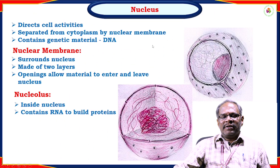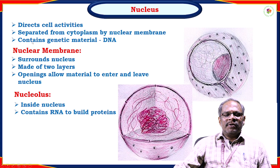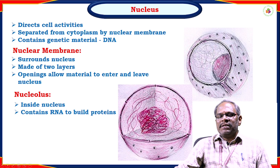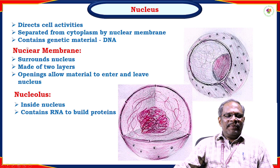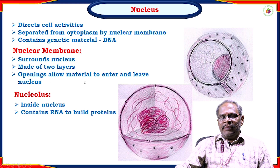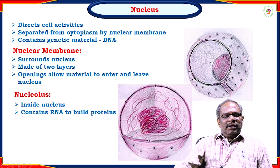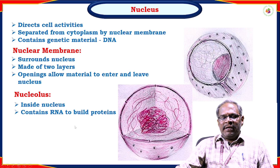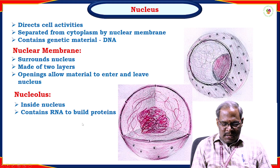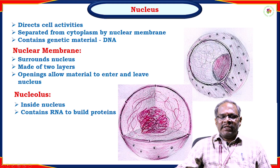Coming to the nucleus: the nucleus is present in eukaryotic cells only. It directs all activities and is separated from the cytoplasm by the nuclear membrane. The nucleus contains genetic material. The nucleolus contains RNA material. The nuclear membrane surrounds the nucleus and is made of two layers, with openings that allow material to enter and exit. The nucleolus is inside the nucleus and contains RNA used to build proteins. RNA is involved in the biosynthesis of proteins.